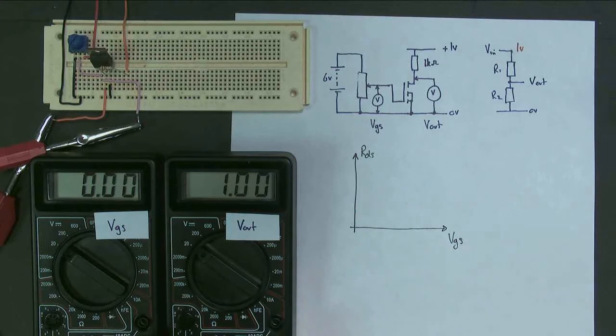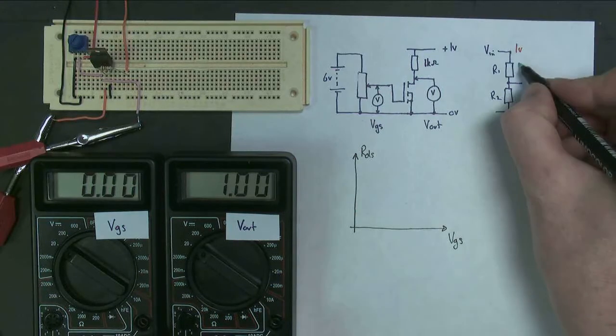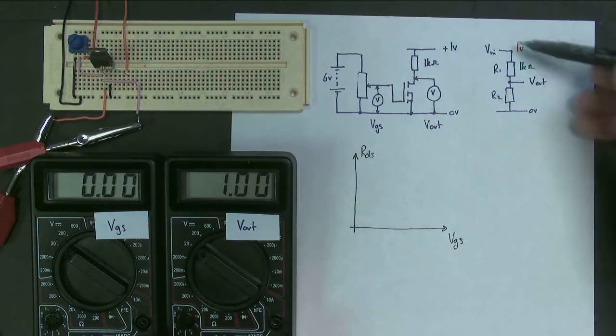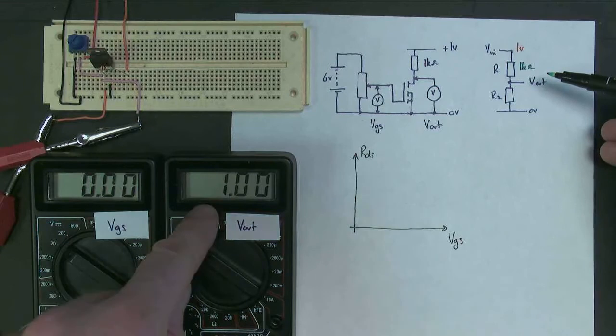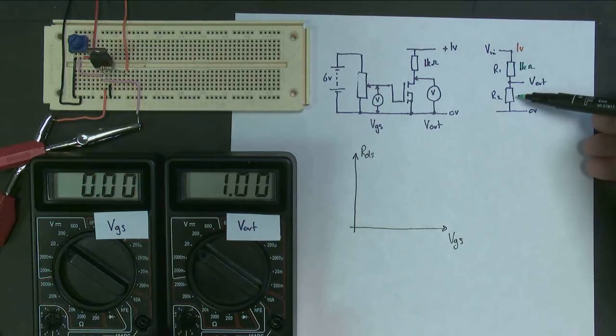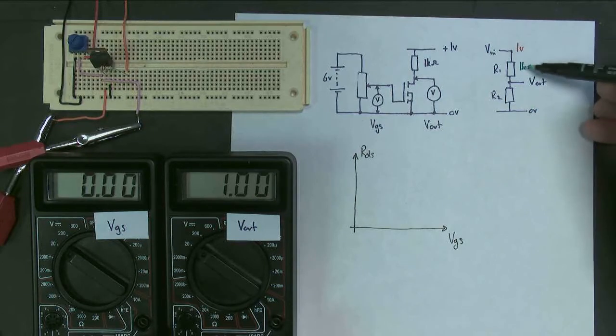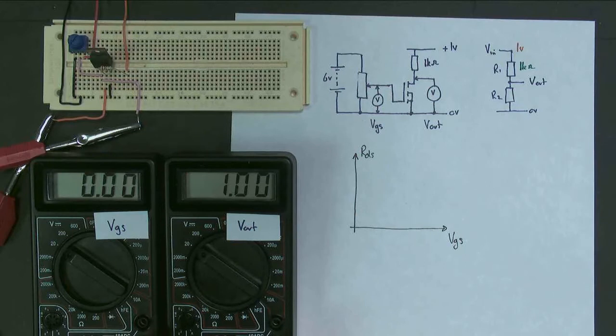My input voltage is one. Now, thinking about potential dividers, if this value here is one kilo ohm, for this output voltage to be effectively the same as the input voltage to within the resolution of the meters, this resistance must be massive, mega ohms, because this resistor is by far the largest of the pair so that this output voltage is much bigger than this voltage here.